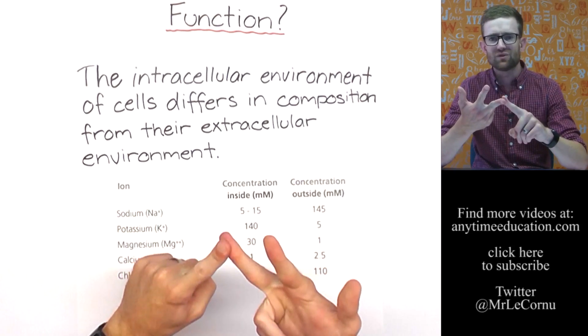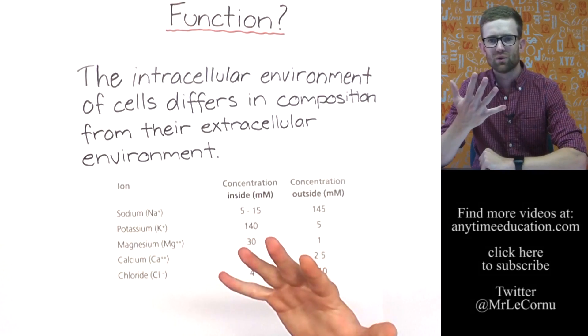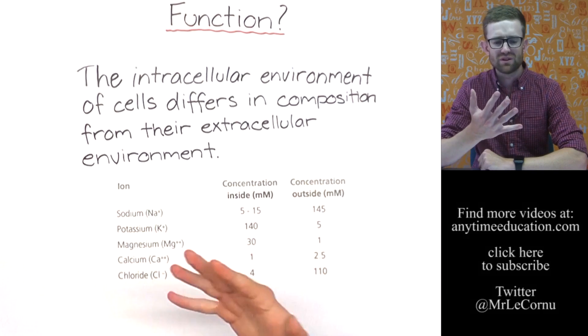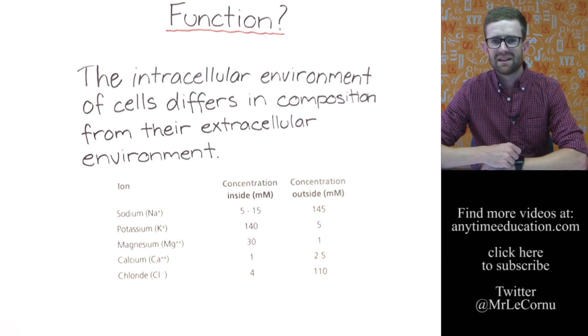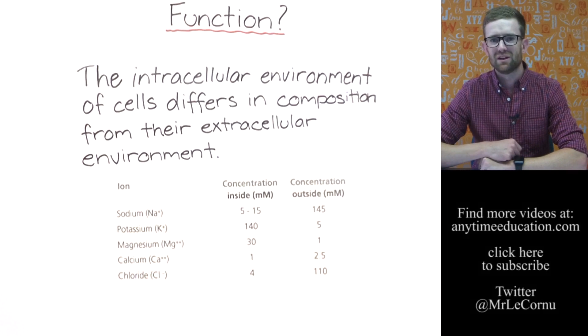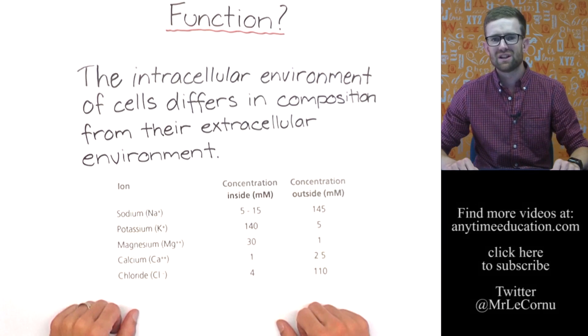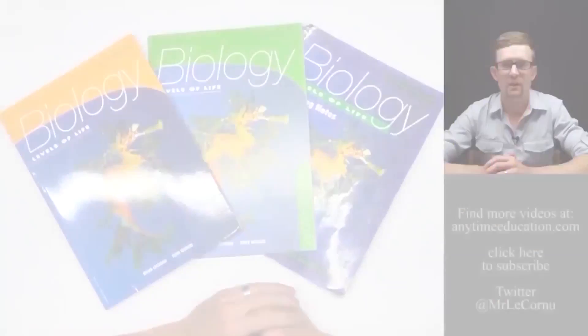So we absolutely have to maintain specific concentrations inside of the cell. That is where diffusion, osmosis, active transport, endocytosis, and exocytosis are all involved. They're the processes by which the cell maintains its internal environment. If you want to find out more about those though, you have to check out some other videos. So that's been the cell membrane and why it's important. Thanks very much for watching and we'll see you next time.